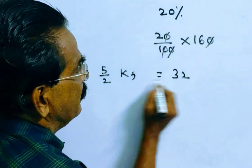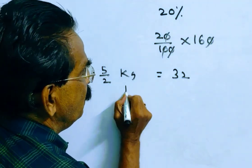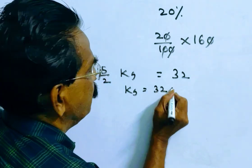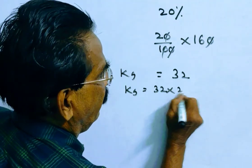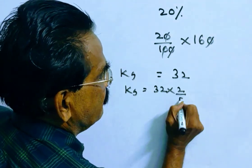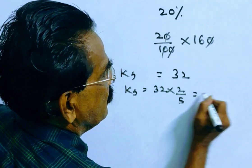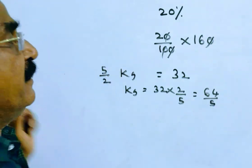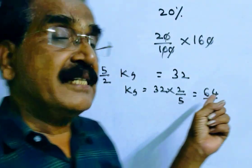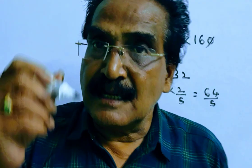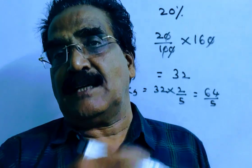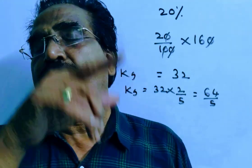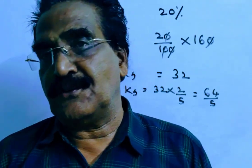5/2 kg is equal to 32 rupees, so 1 kg is equal to 32 × 2/5, that is equal to 64/5. This 64/5 is the reduced price of the sugar per kg, but we want the original price of the sugar per kg.